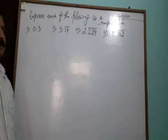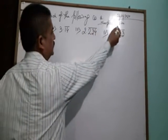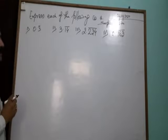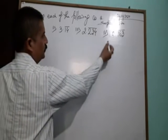Today, express each of the following as the simplest form. Just example: 0.3 repeating, 3.14 repeating, 2.234 repeating, 0.163.